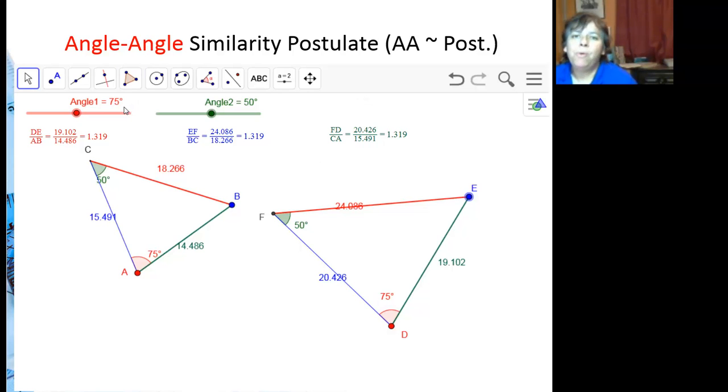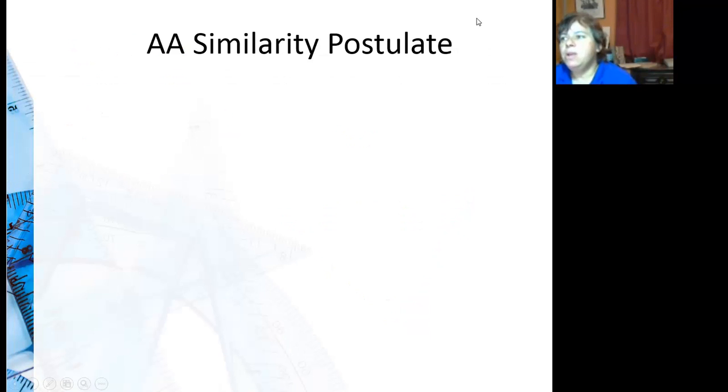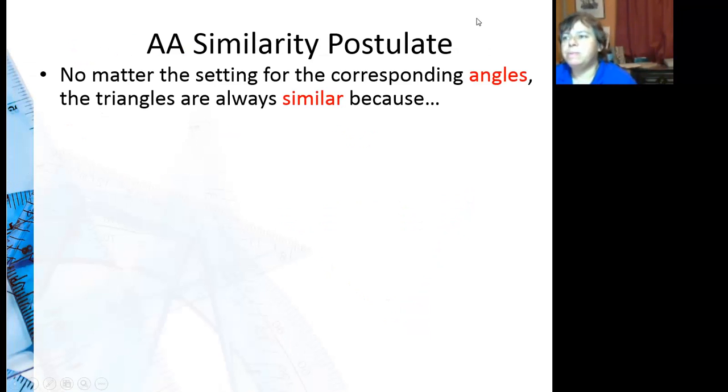So the main point is that if two angles are congruent on two triangles, if the two corresponding angles are congruent on two triangles, then the triangles will be similar. Which gives us our angle-angle similarity postulate.